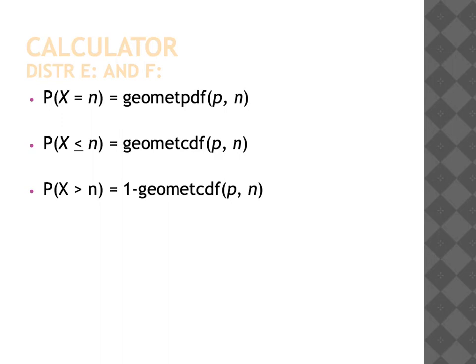I encourage you to understand the formulas as well as be able to calculate on multiple choice problems using your calculator — it's more efficient. For written problems it's okay to use your calculator, but show the formulas you're using as much as possible; the calculator should be used to confirm correct answers. The PDF gives an exact value, the CDF gives everything below and equal to a certain point, and the greater-than scenario is one minus the CDF — just as with the binomial. When entering values, list your probability of success first and your number of trials second.